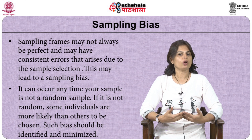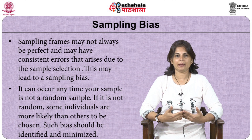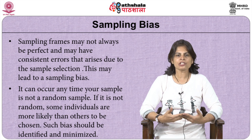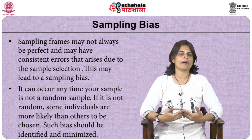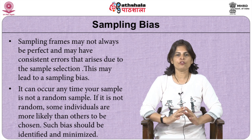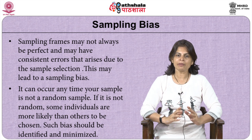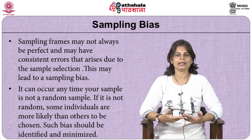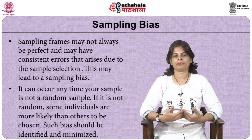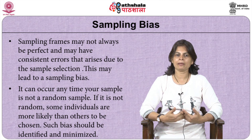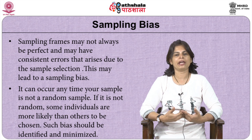Now what is sampling bias? Sampling frames may not always be perfect. They may have consistent errors which arise due to the sample selection, and this usually leads to a sampling bias. It can occur if your sample is not a random sample — in that case some individuals are more likely to get represented or chosen in your sample than others. Such sampling biases should be identified prior to analysis and minimized.